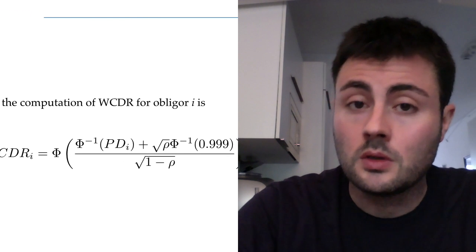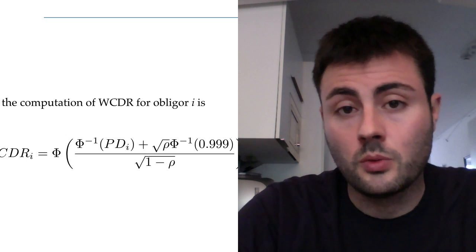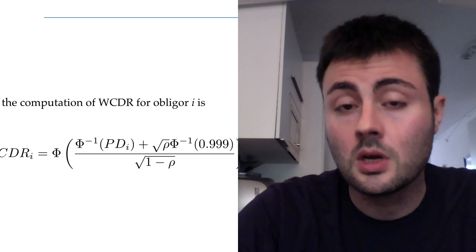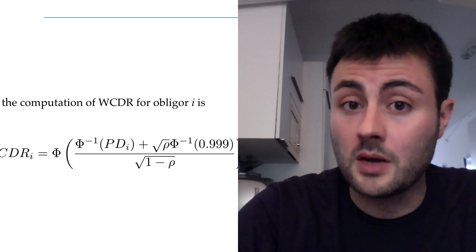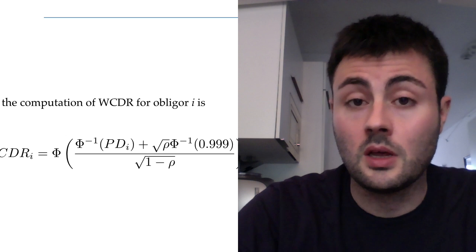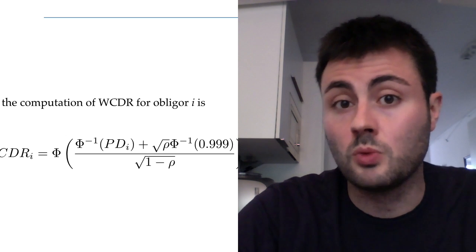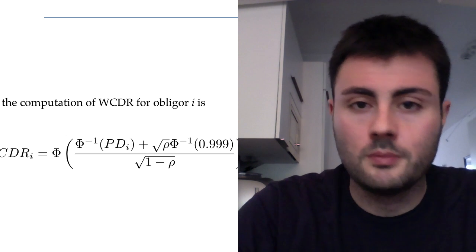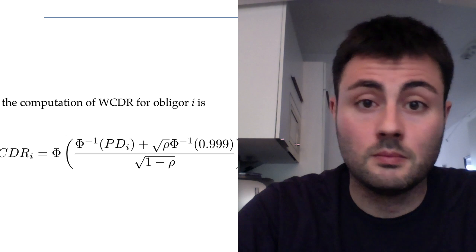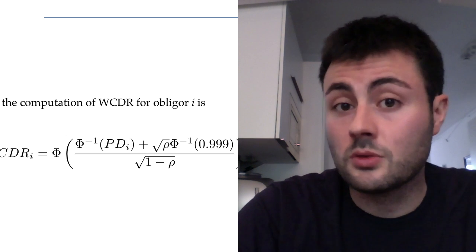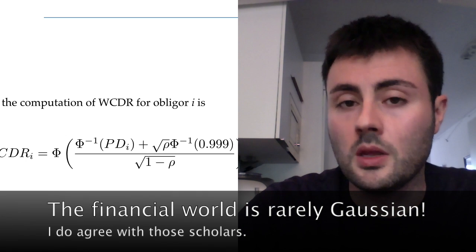Just notice that in the formula you see on your screen for the computation of the worst case default rate, we use the standard Gaussian distribution. We have capital Φ, which is the cumulative distribution function of a standard Gaussian, and we have capital Φ to the minus 1, which is the quantile function of a standard Gaussian. As you can see, the probability of default is one of the arguments of this function. As usual, those guys in Basel seem to like the Gaussian distribution a lot.